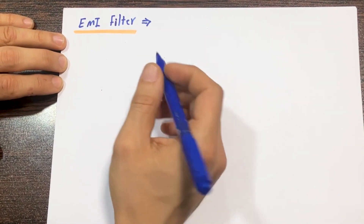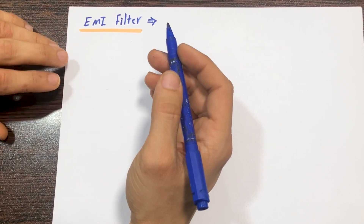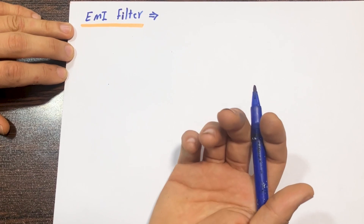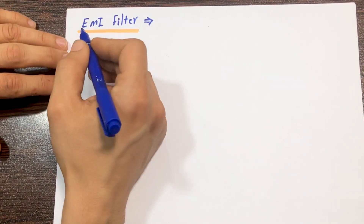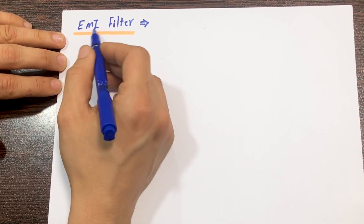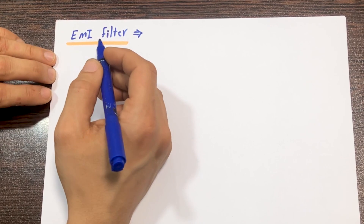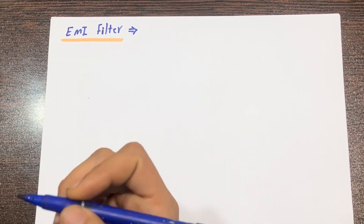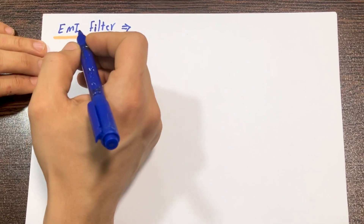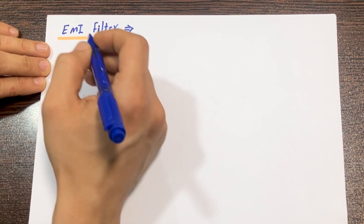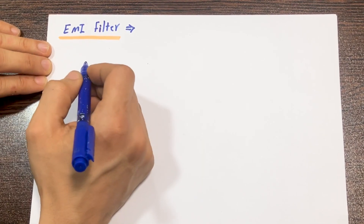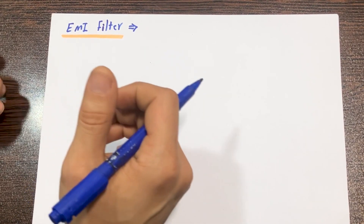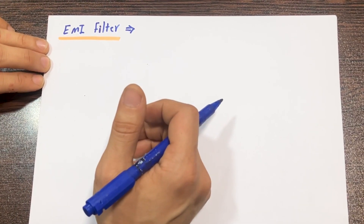Hello guys, today I want to speak about EMI filters and ferrite bead filters — what they are, their applications, and their structure, and why we should use them. These kinds of filters are placed on the input of each appliance, especially in switching power supplies or medical instruments, to remove noise that comes from electrical power lines. The filter consists of inductors and capacitors, and I will show you the components and their performance in the slides.